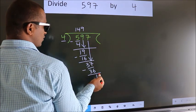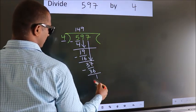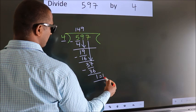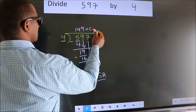No more numbers to bring it down, so we stop here. This is our remainder. This is our quotient.